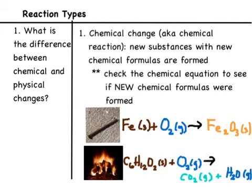Before we talk about the reaction types, we're going to review something we learned early last semester, which is the difference between chemical and physical changes, because substances can go through either chemical changes — where something new is actually formed — or physical changes, which is like a change in the state of matter. So let's take a look and review those concepts.